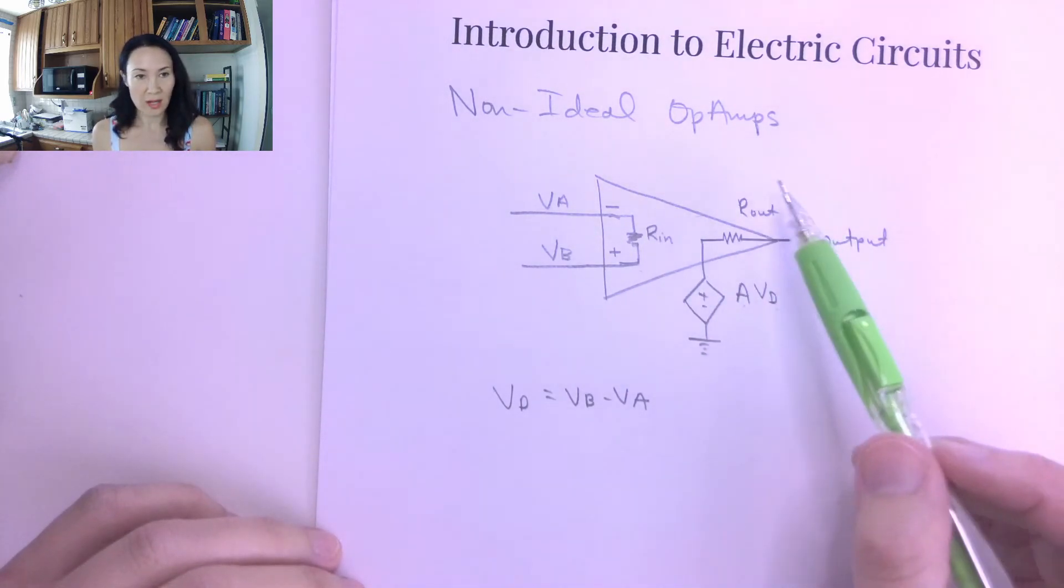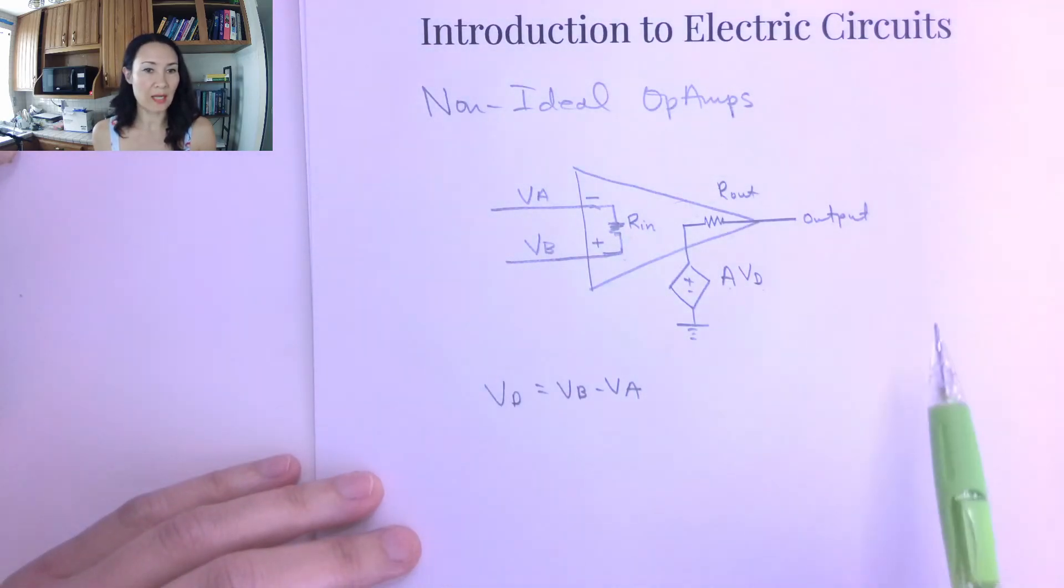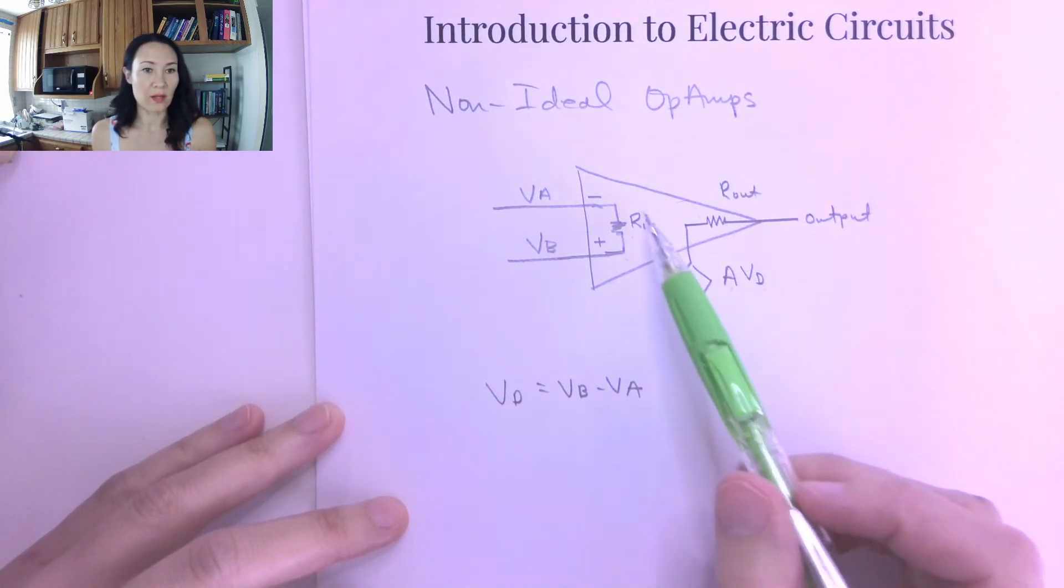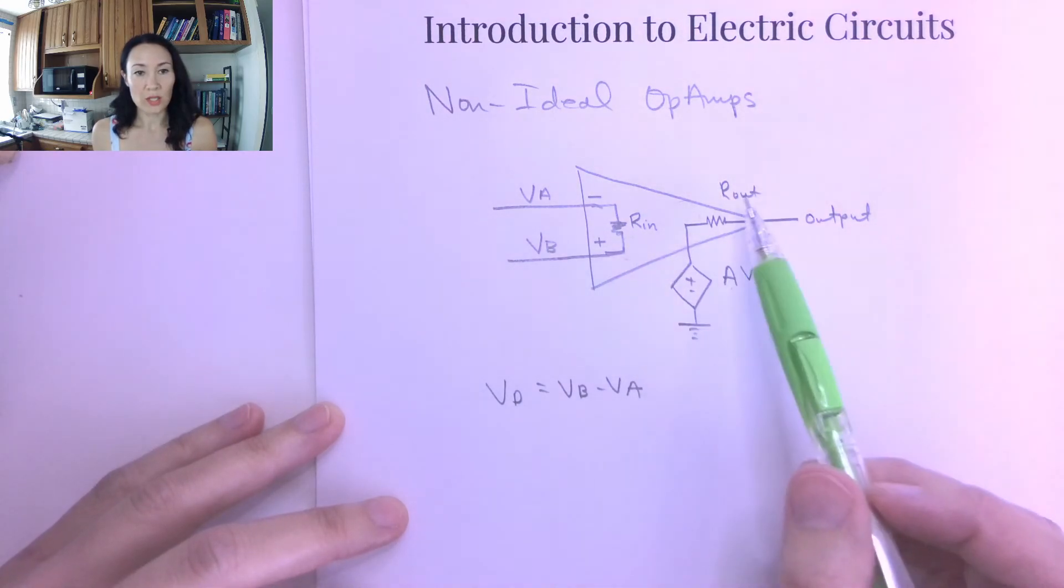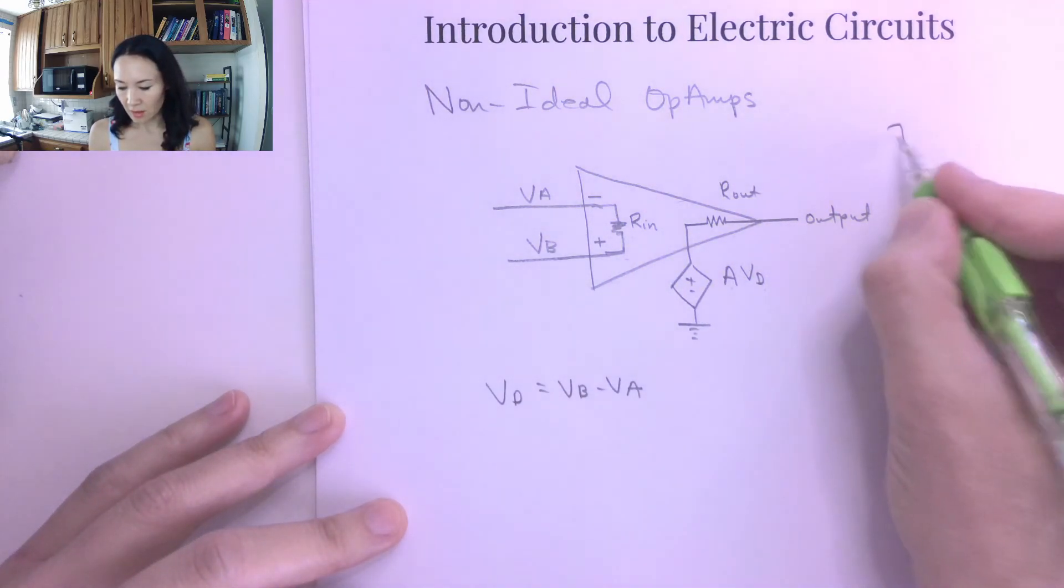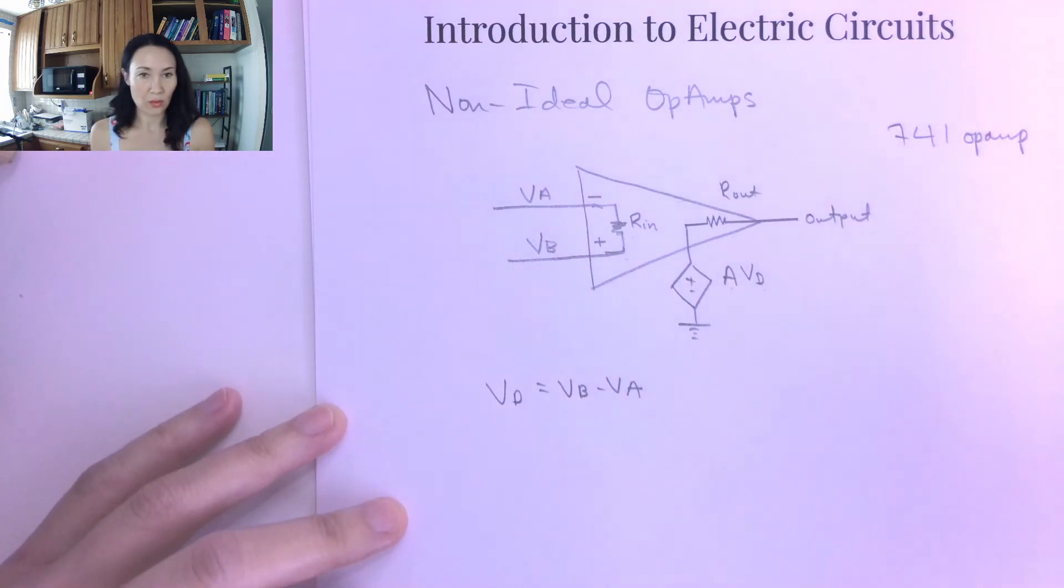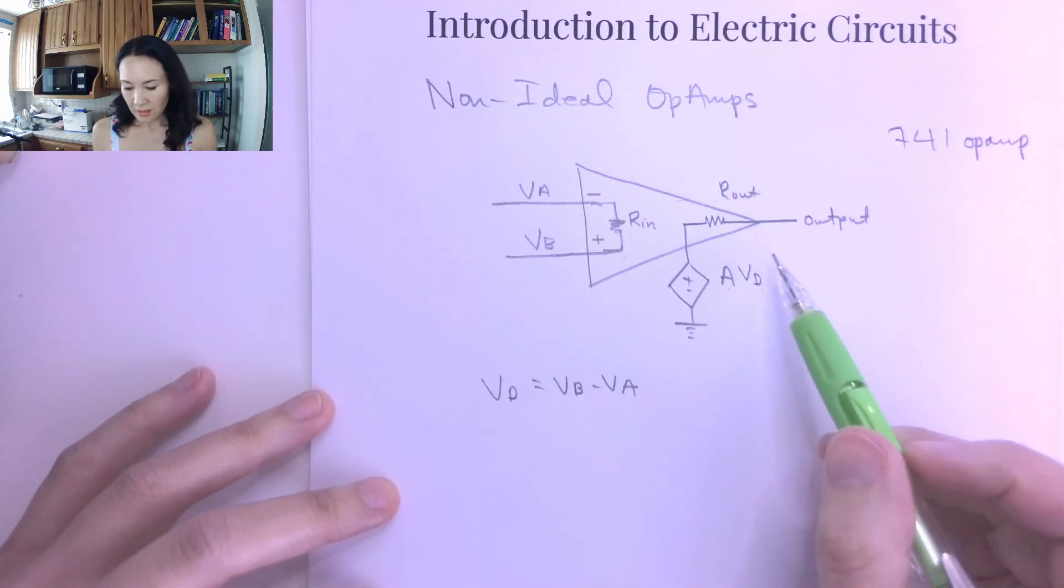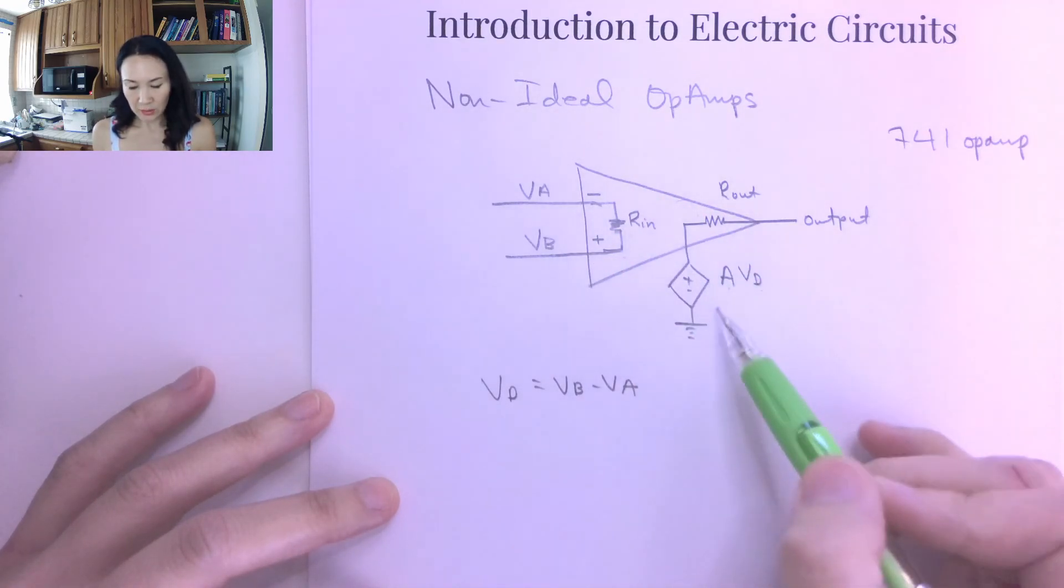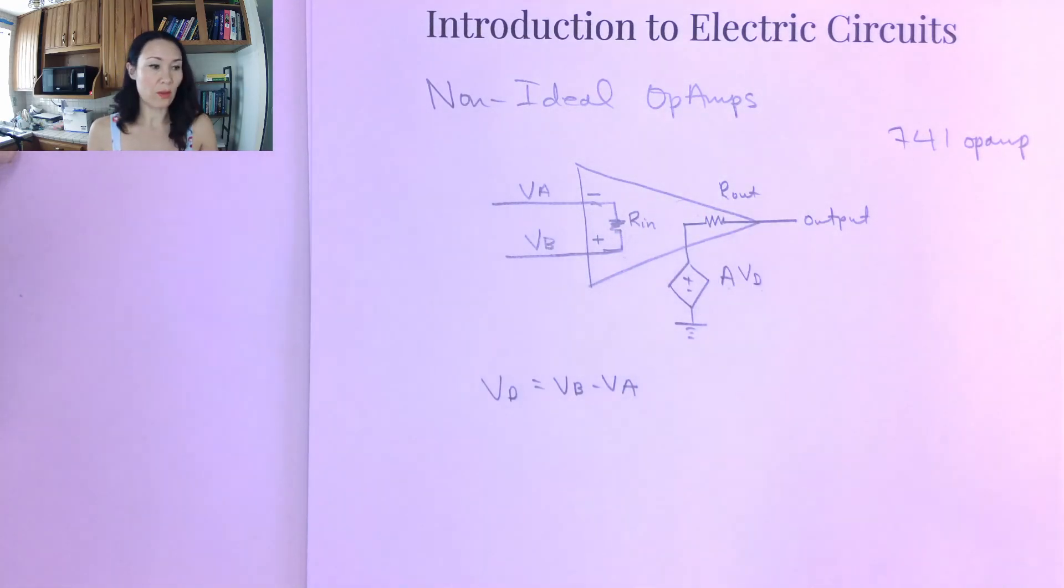So this is the non-ideal op amp. That means we don't make any approximations. We just use the straight values for Rn and Rout, which is going to be listed on the spec sheet for the 741 op amp that you can Google and look at that. And then inside of the op amp is actually this circuitry here. So let me know if you have questions about that.